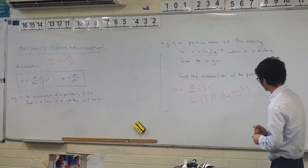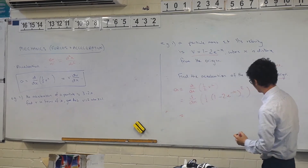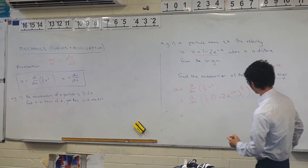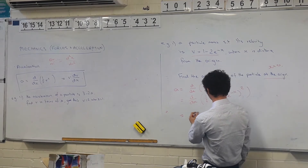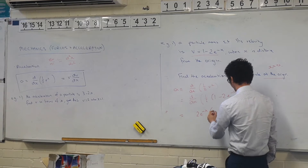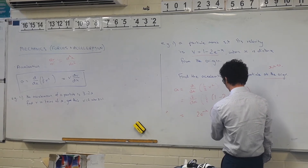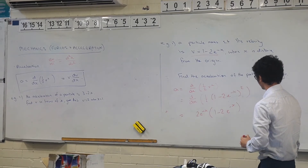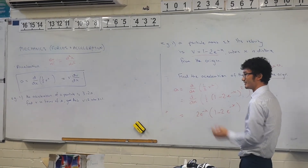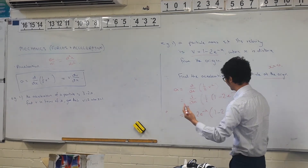3e to the minus x... 1 minus 3e to the minus x. 2e to the minus x on the outside. You can just do that by doing chain rule. Because that's the same as v dv/dx.